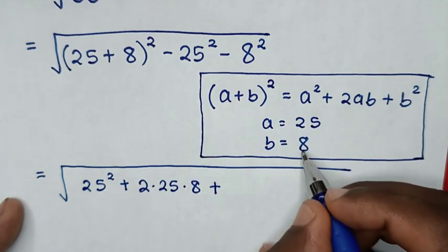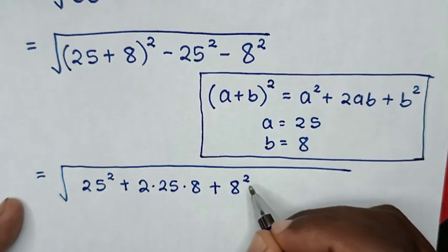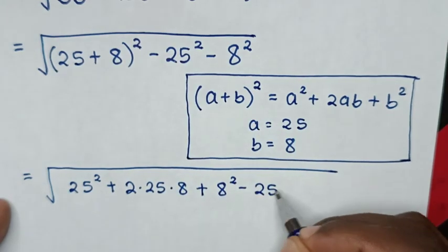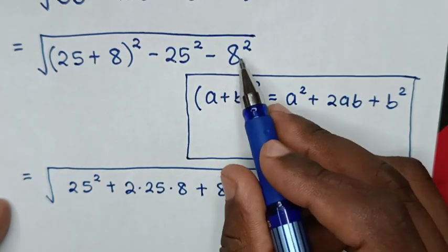So, it will be plus b is 8, so it will be 8 square, then minus 25 square, then minus 8 square.